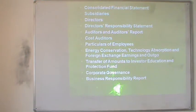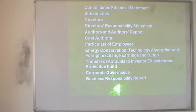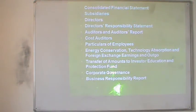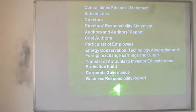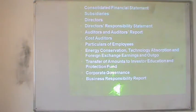If the company is included in the list for which cost accounting is compulsory, they also have to present the cost auditor's name and work. The particulars of employees are another point of concern — the number of people working in the company and whether they have increased or decreased in the last year. As per mandatory requirement, the director's report also includes energy conservation, technology absorption, and financial earnings and outgo. These are part of the annexure of the director's report and will be checked during the annexure section.